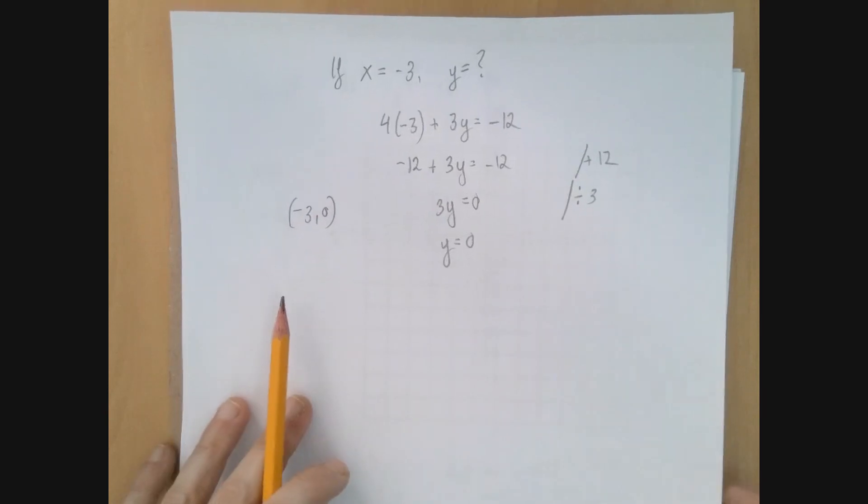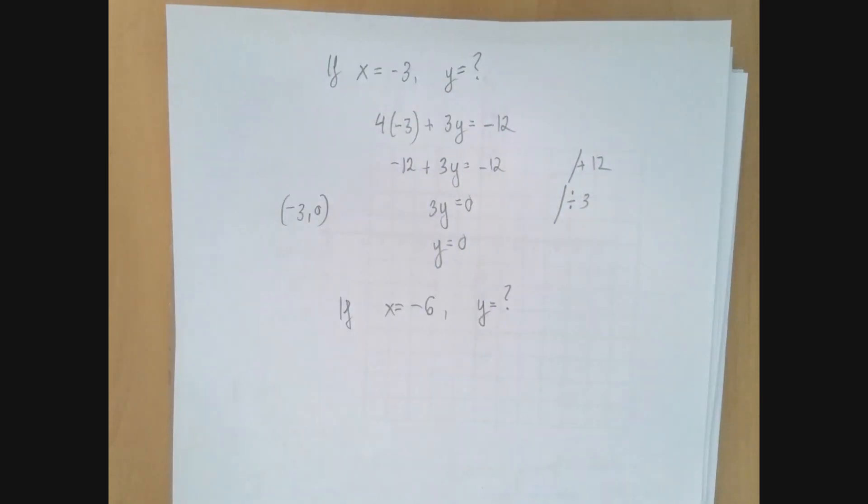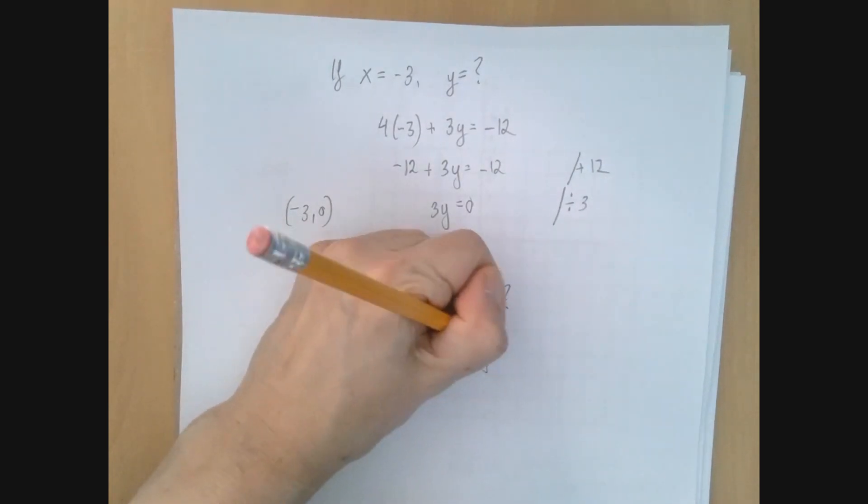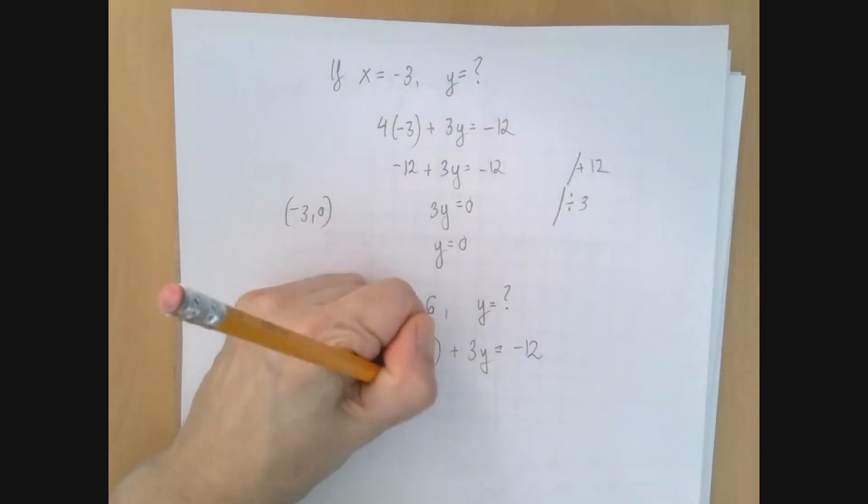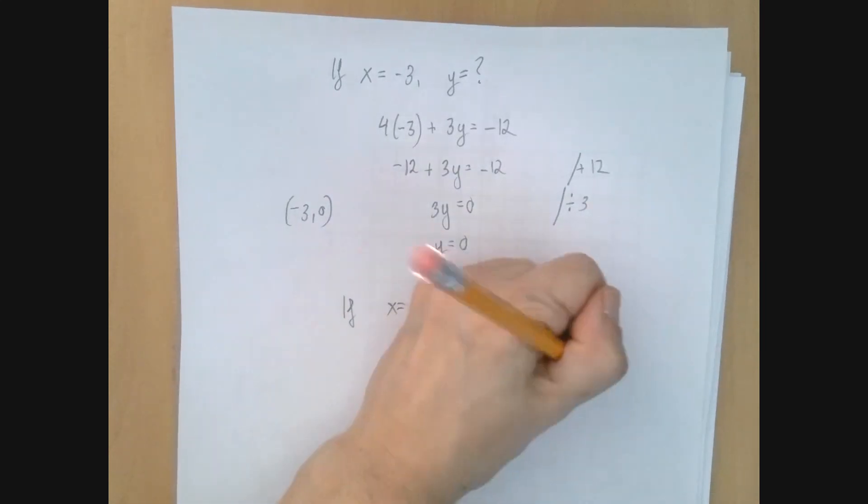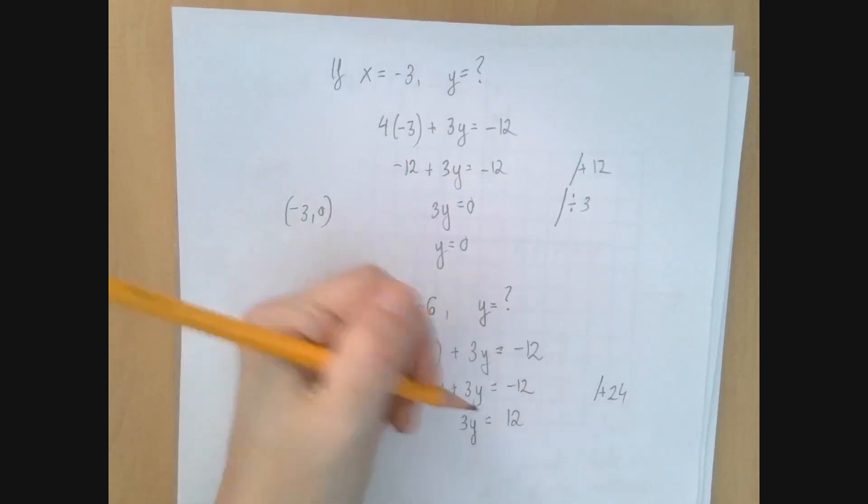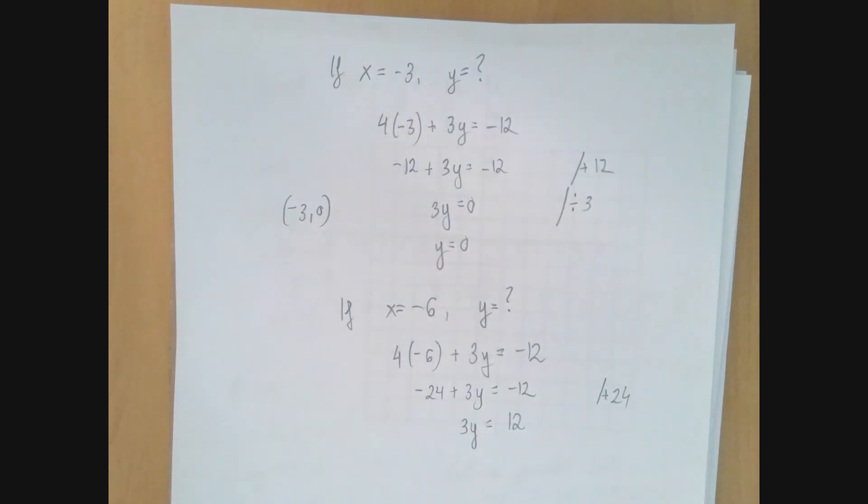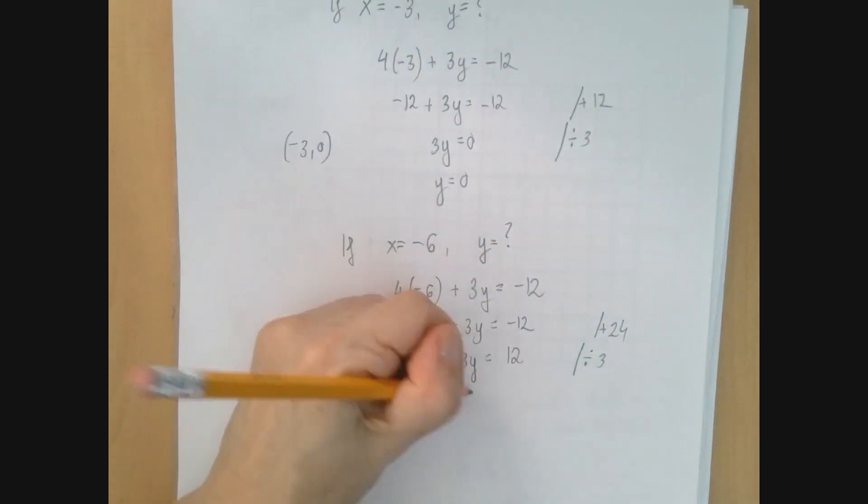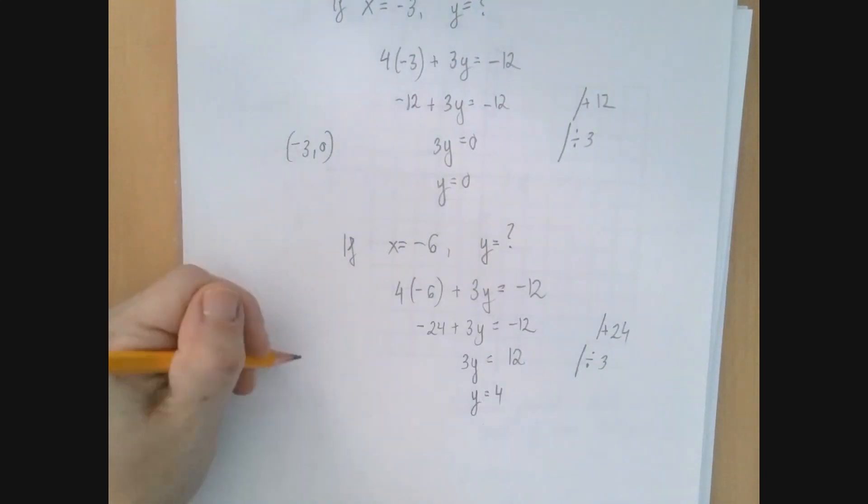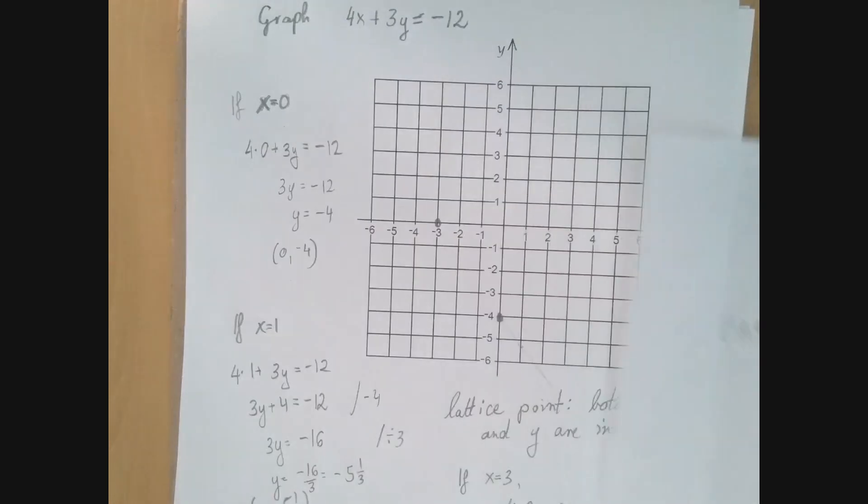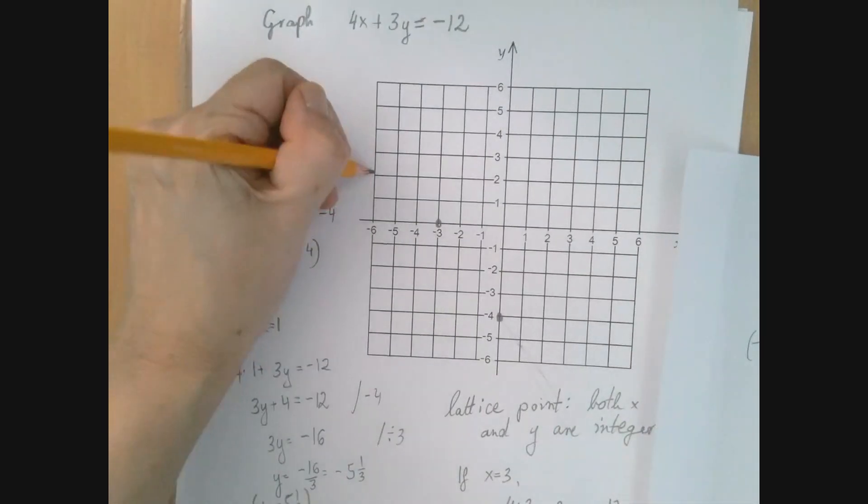And we kind of see a pattern emerge here. So we can expect for negative 6 something higher, a positive value. Let's see that. So if x is negative 6, we have 4 times negative 6 plus 3y equals negative 12. And it's negative 24 plus 3y equals negative 12. We add 24 to both sides. Negative 12 plus 24 is positive 12. And now when we divide both sides by 3, we get y equals 4. So we found the point (-6, 4). Negative 6, 4.